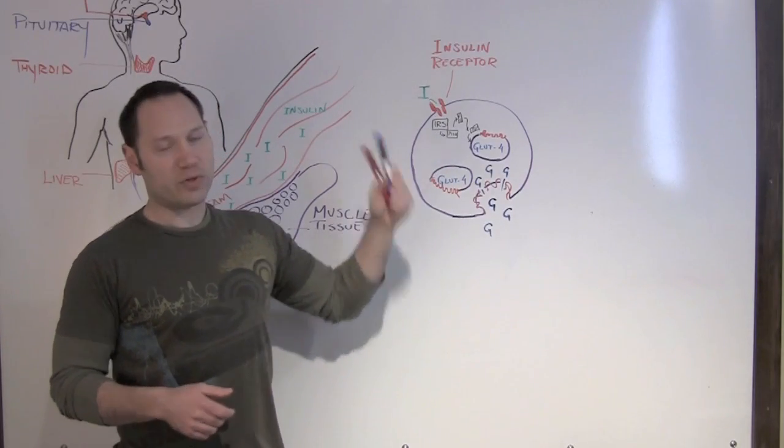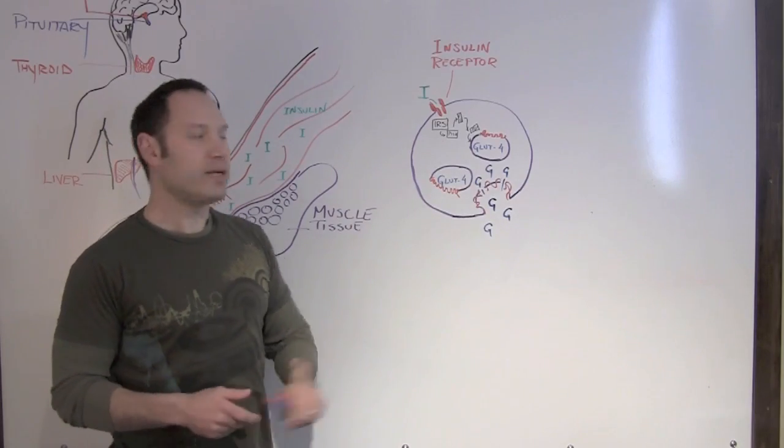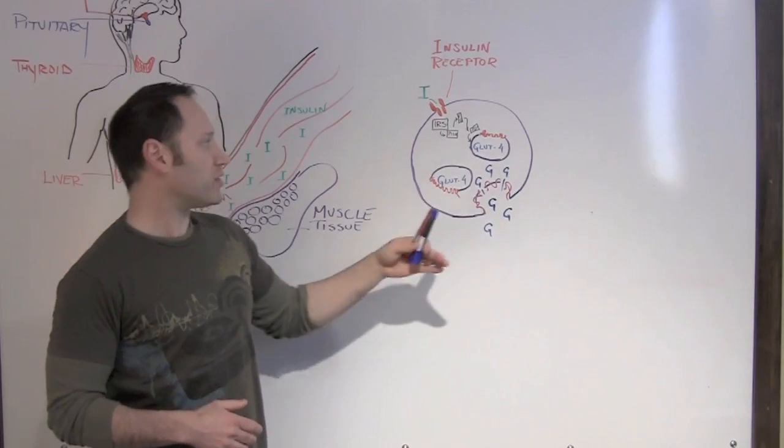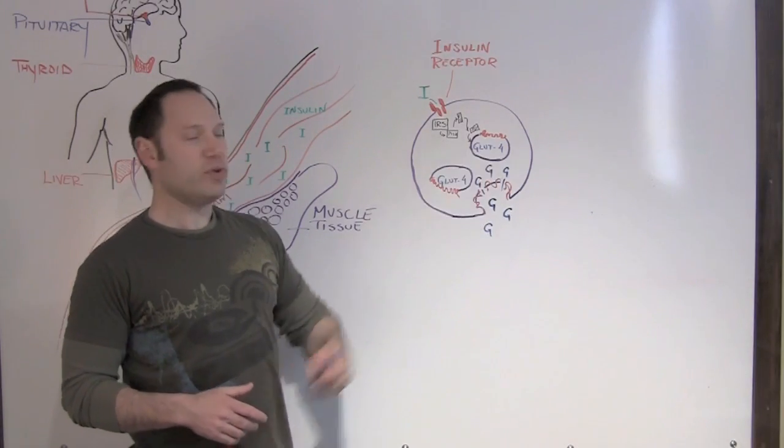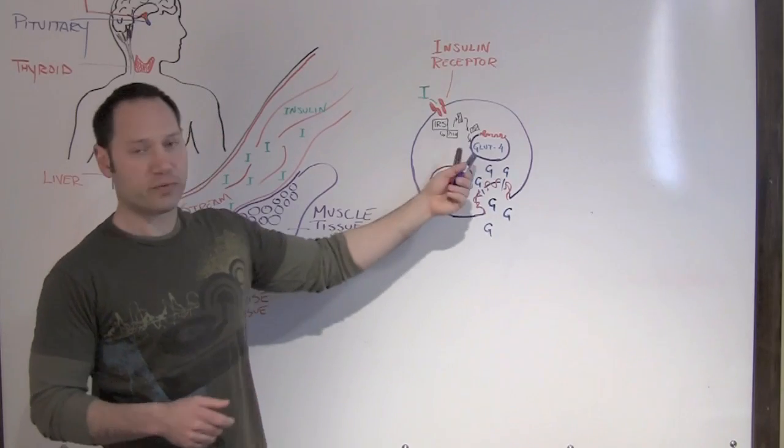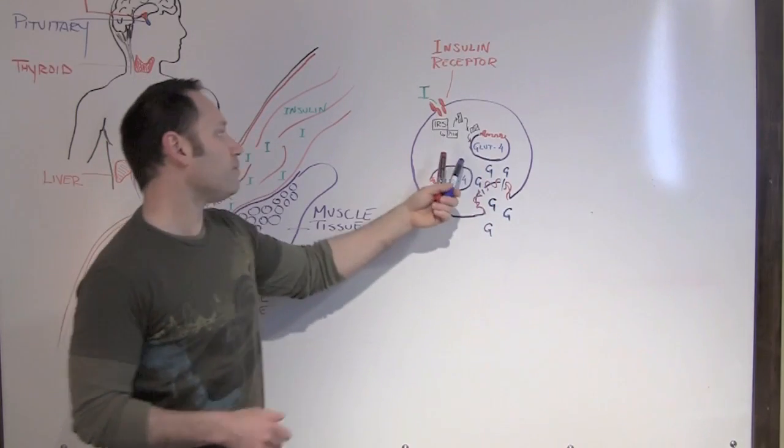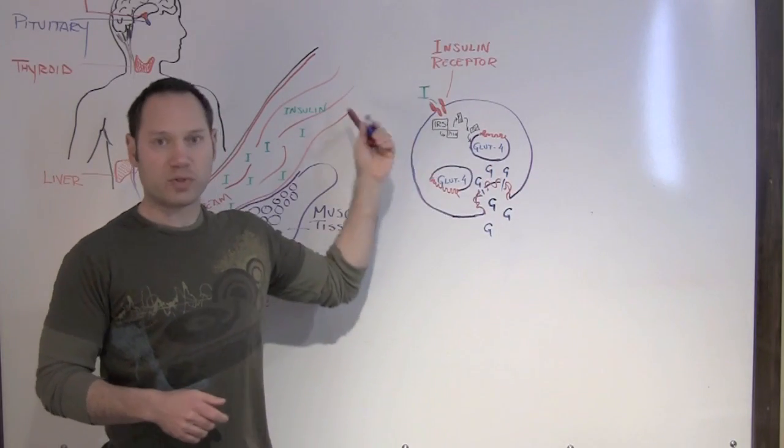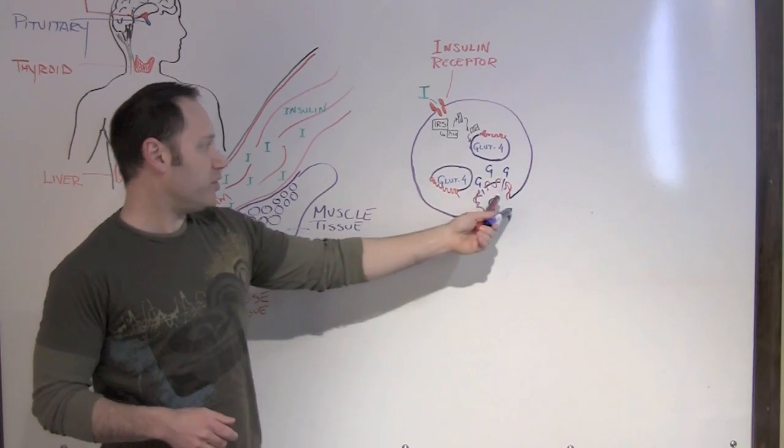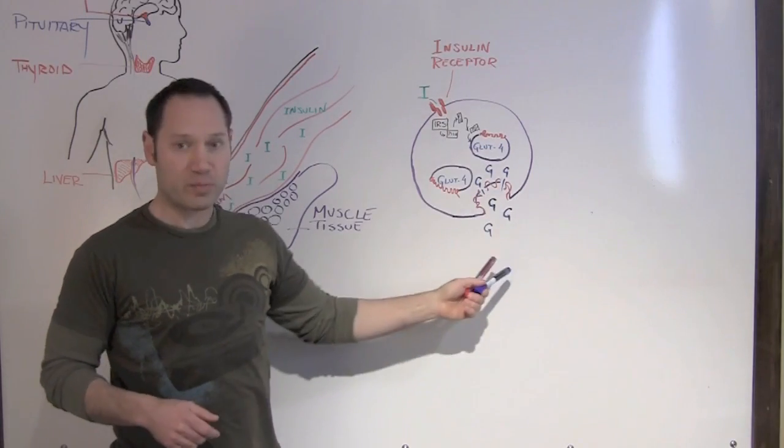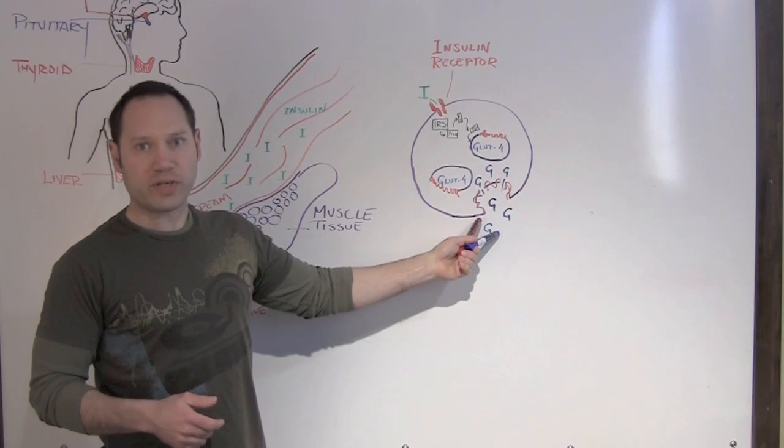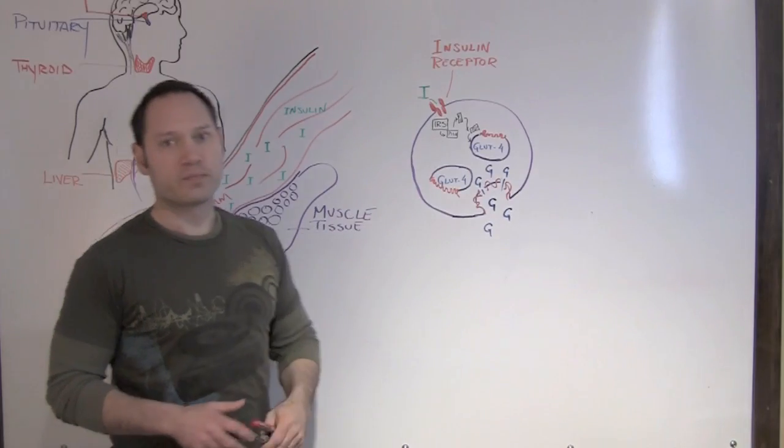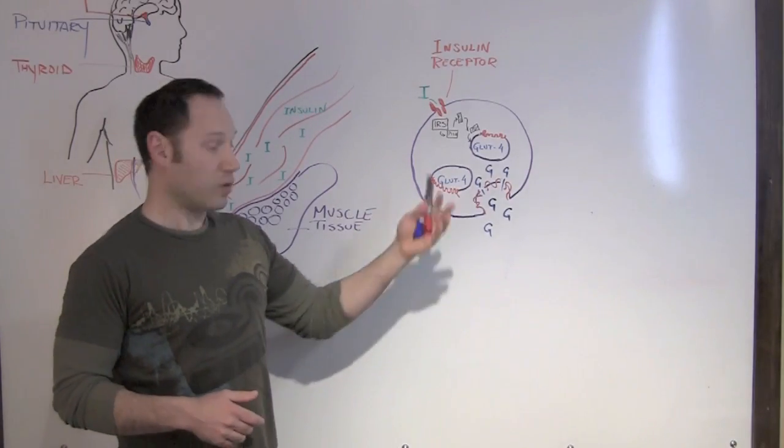It's going to start with something called IRS, which is insulin receptor substrate, and that's going to talk to some of the proteins and enzymes. It creates this cascade effect to where it finally communicates with something called GLUT4, or glucose transport type 4. When this GLUT4 protein gets the message that there's some glucose that wants to come into the cell, it moves to the edge of the cell, to the cell membrane, and then that's really the doorway that allows glucose to cross over and into the cell where it's used to make energy or ATP.